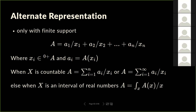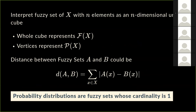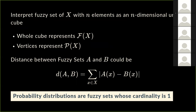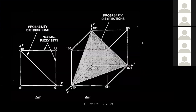A student asks if fuzzy sets satisfy probability axioms. They don't have to — fuzzy set theory is a generalization of what probability theory can do. The definition of complement alone (1 minus membership) makes it look like probability, but they're actually different frameworks.